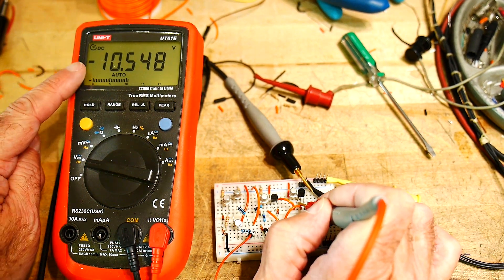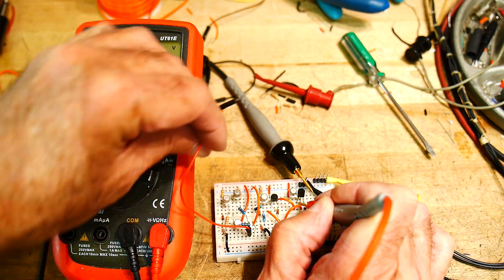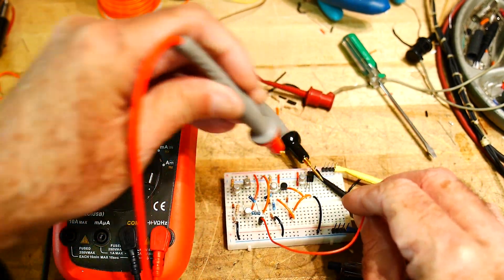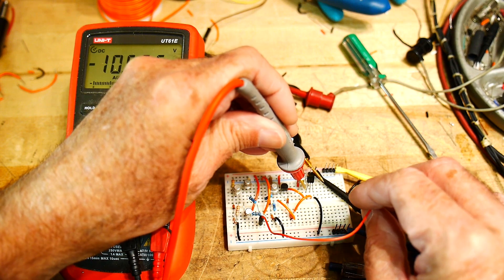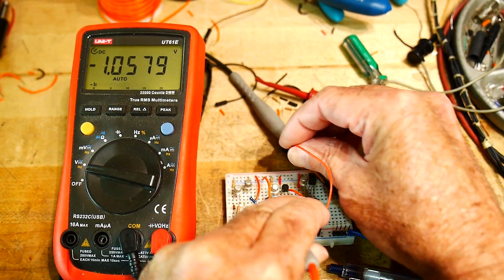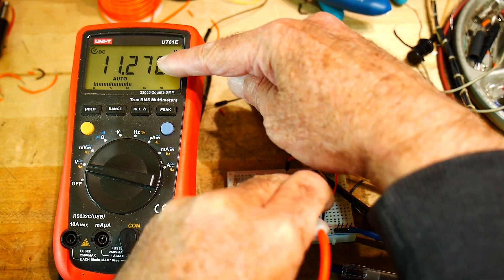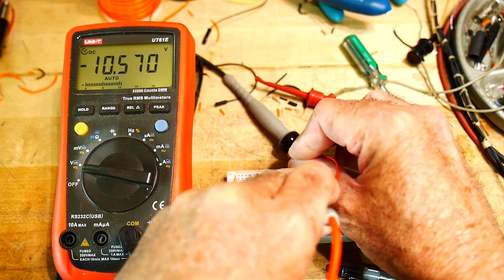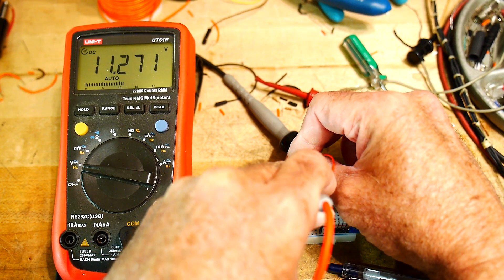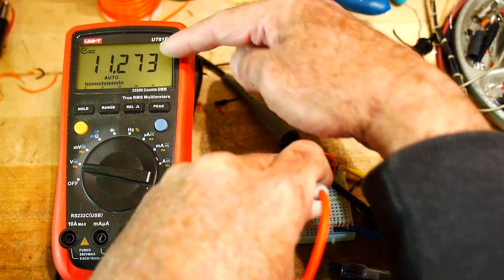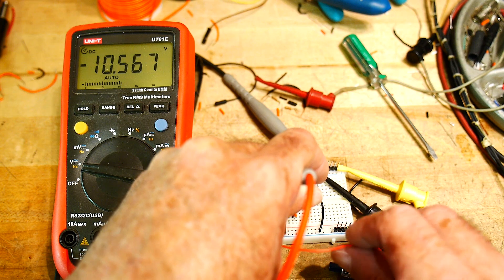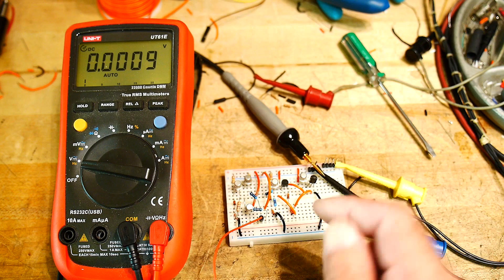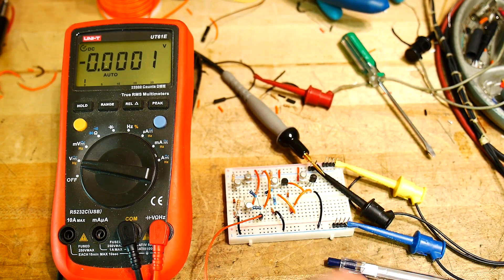And I'm going to look at the output. Currently the output's at negative 10.5. And if I take the positive and hook it up to plus 12, you can see that it changed from minus 10 to plus 11. So the output is swinging as it should. So when the positive input is higher than the negative input, it goes to the plus rail. It flips back and forth. So now we can see if the op amp acts as an op amp.